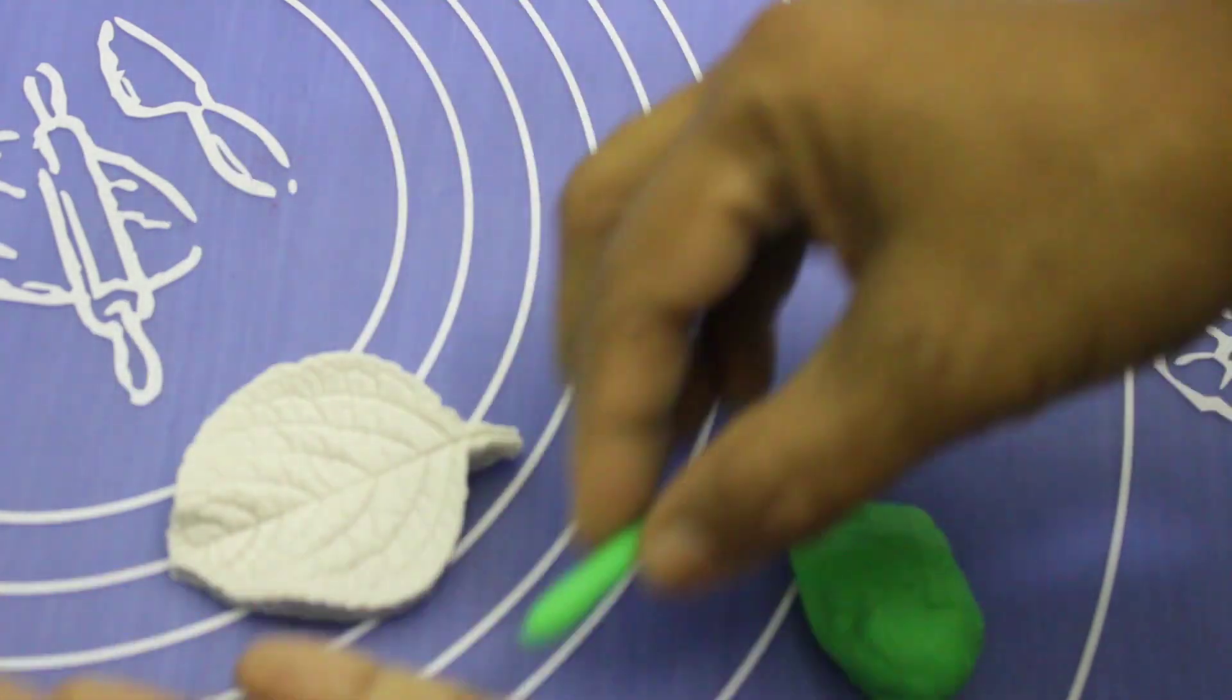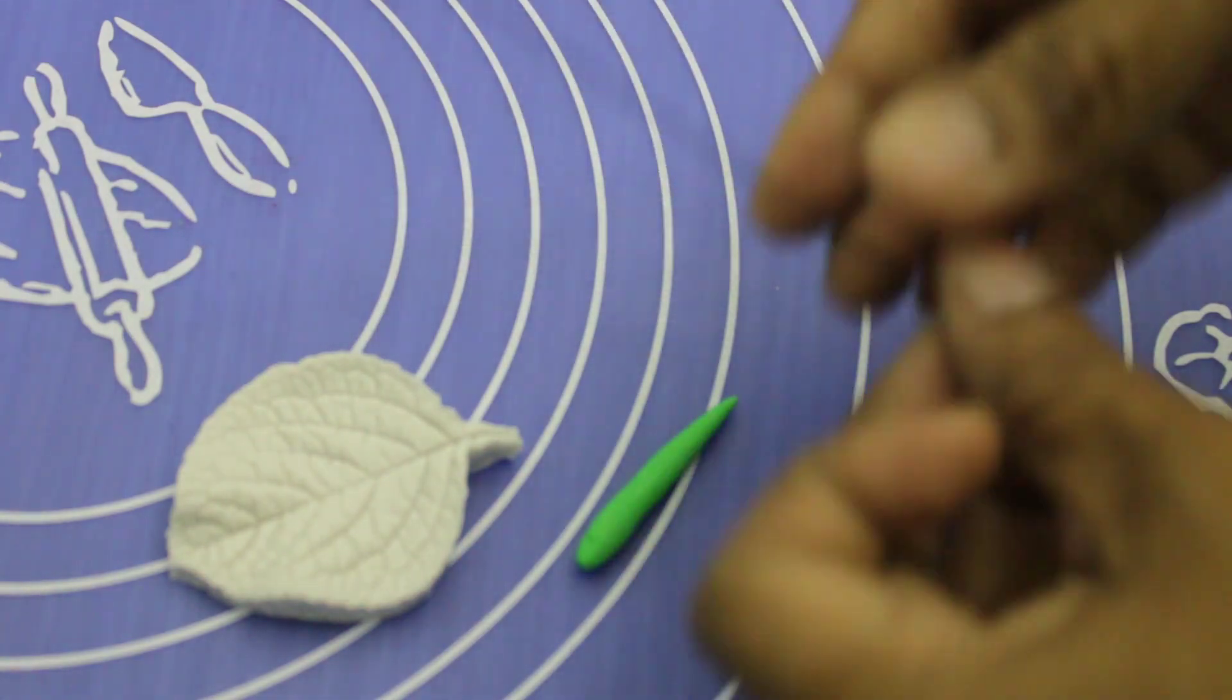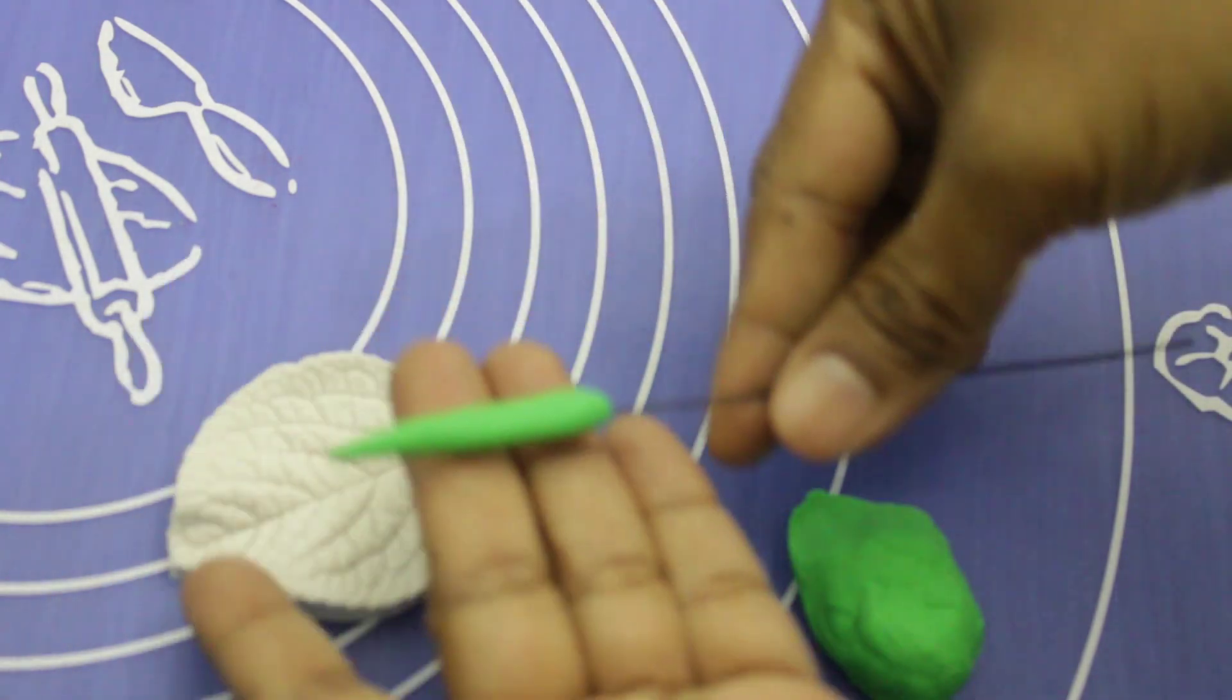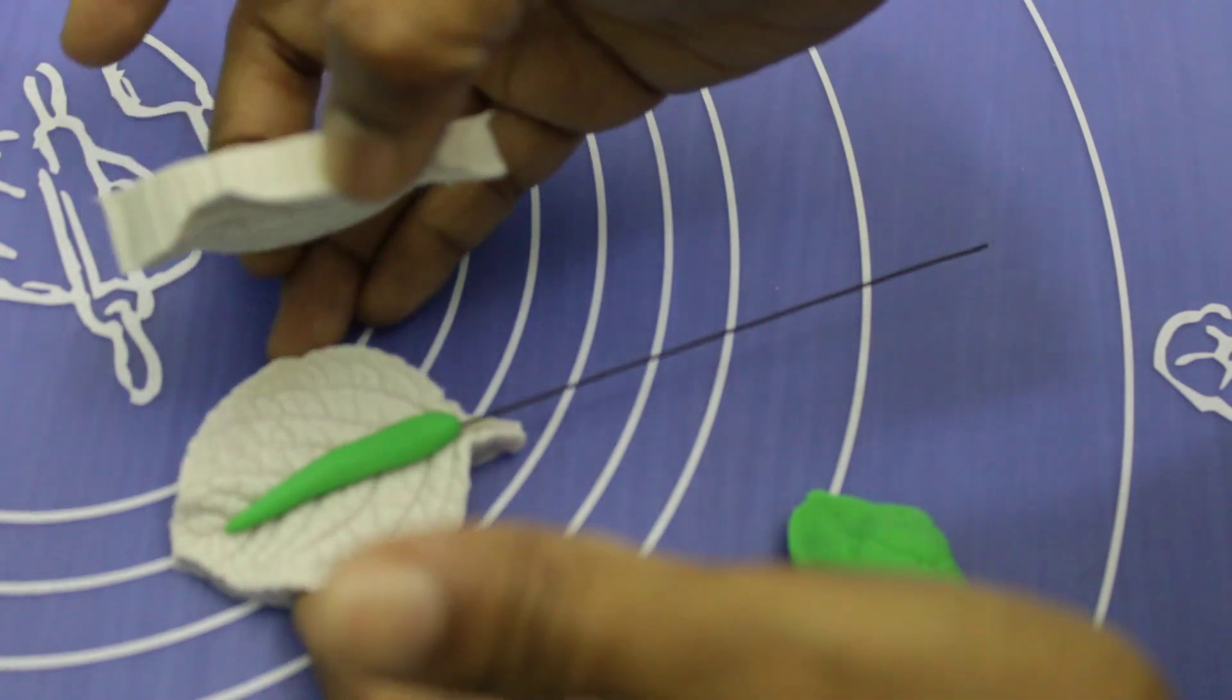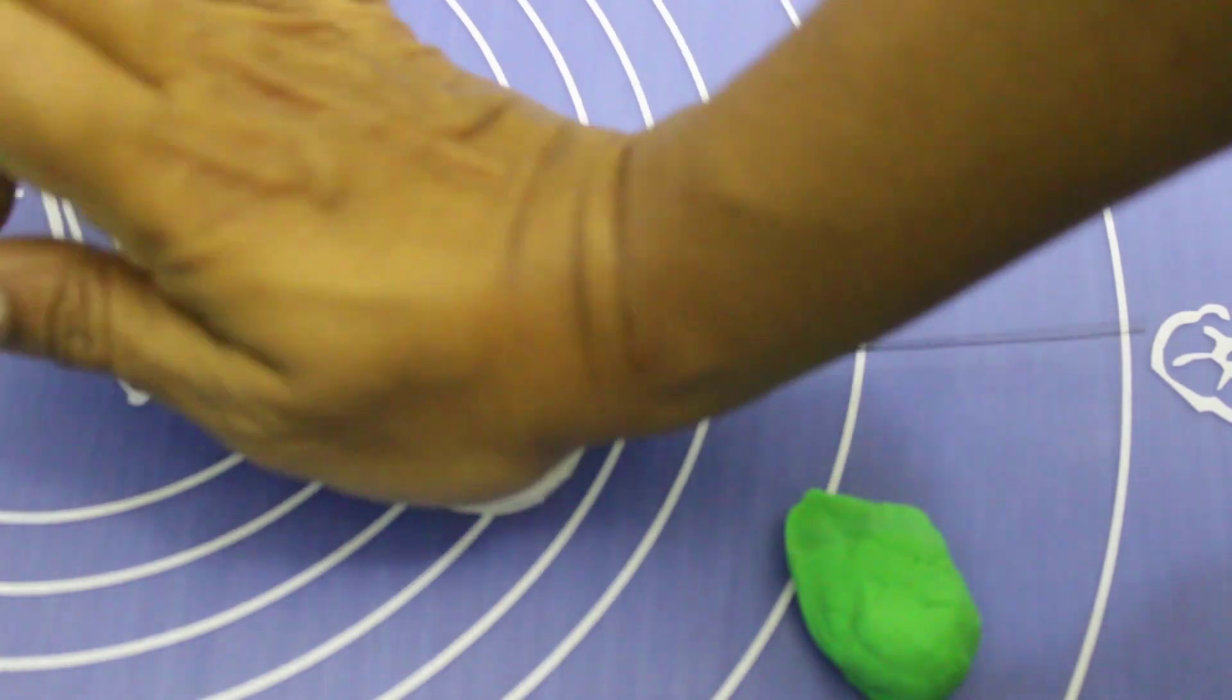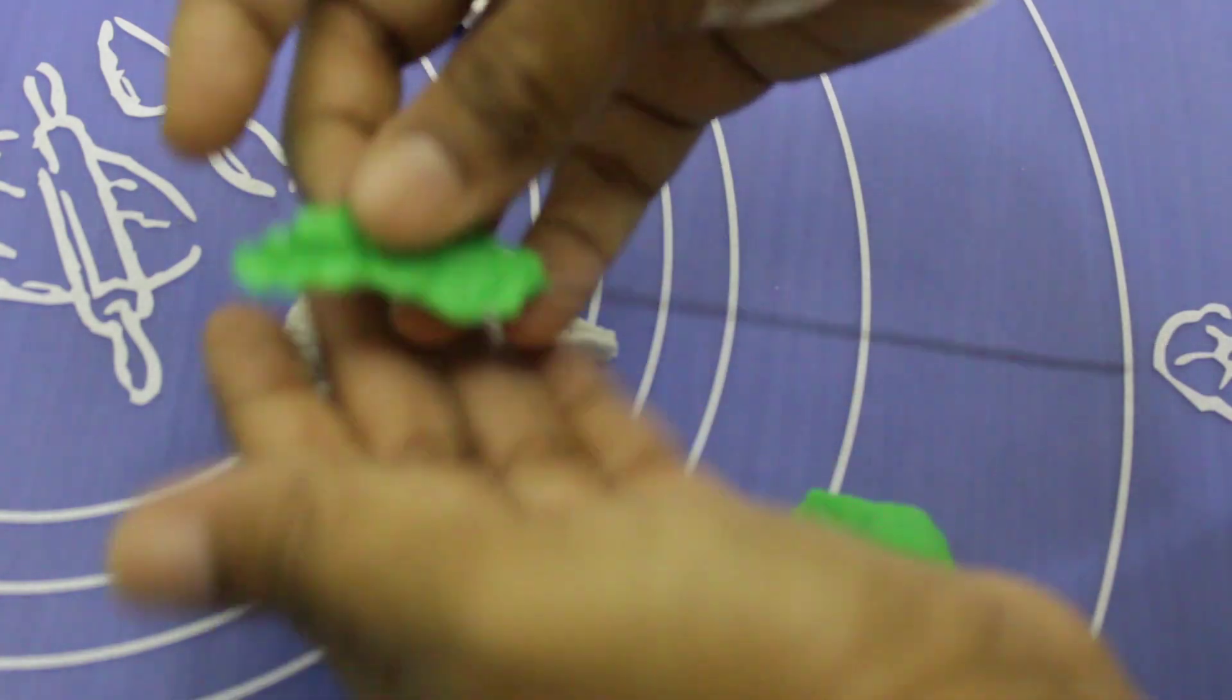And what I am doing, I am using this veiner from this side. Push it inside all the way here. Place this thing here and press it hard to make a leaf. You see, this is the one. Take it out carefully like this and press here a little bit.